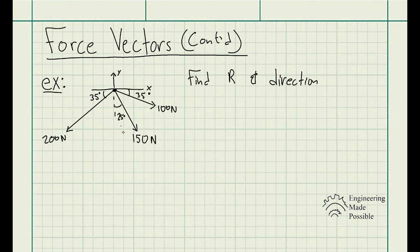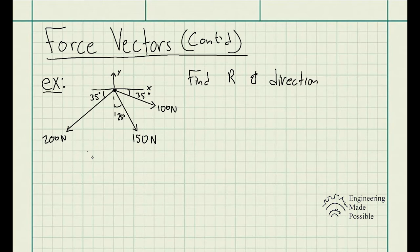For this example, we have three force vectors: one that's 200 newtons, another that's 150, and one that's 100. Each has their respective angles: 35, 25, and 35 degrees. We need to find the resultant force of these three vectors and the direction. We split them into X and Y components, add up all the X components and all the Y components, then use the Pythagorean theorem to find the resultant force.